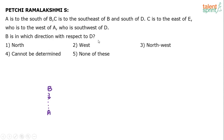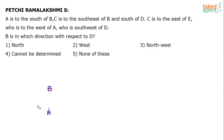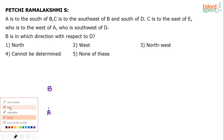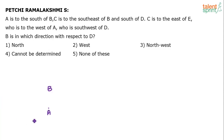All we have been given is the direction. A is to the south of B, but A can be anywhere on the straight vertical line below B. Let's fix A's position here to avoid confusion, but remember A can be at any point in that line. Now, C is to the southeast of B.